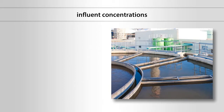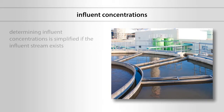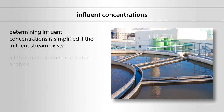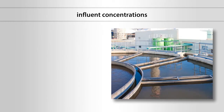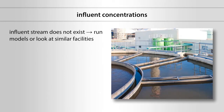Influent concentrations for the contaminants of concern are the second important design criterion. Determining influent concentrations is greatly simplified if the influent stream currently exists — all that must be done is a complete water analysis. However, the influent stream frequently does not yet exist, as in the case of an entirely new industrial facility. In that case, scientists and engineers typically run models or look at similar facilities to estimate average concentrations or a range of possible concentrations.